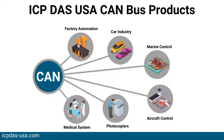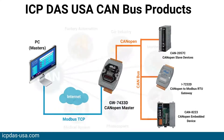CAN protocol supports distributed real-time control and multi-master capabilities. You can use it for networking intelligent devices, data acquisition, controllers, sensors, and actuators within a system or subsystem.